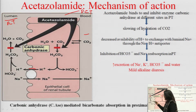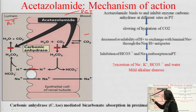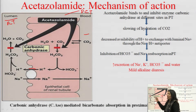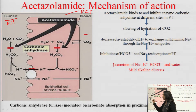The hydrogen ion combines with bicarbonate present in the lumen to form carbonic acid. This carbonic acid, in the presence of carbonic anhydrase enzyme present on the brush border of the epithelium, undergoes dehydration to form water and carbon dioxide.